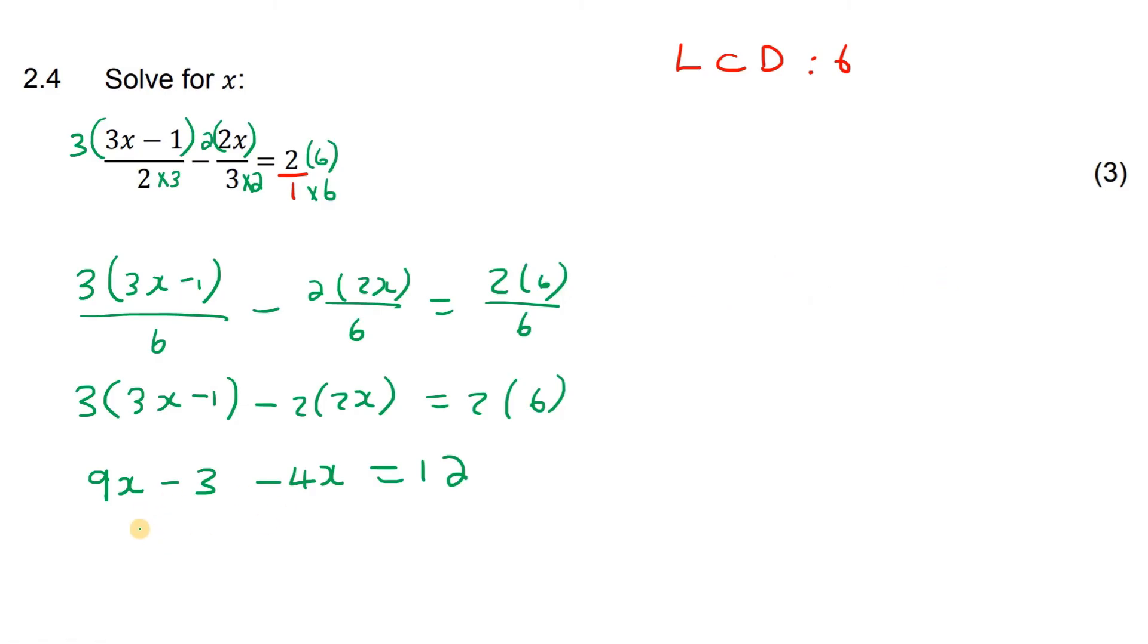So what we now get is a normal linear equation. We'll take the minus 3 over to the other side. On the left, we'll have 9x take away 4x. On the right, we have 12 plus 3. It became a plus 3 because we took it over to the other side.